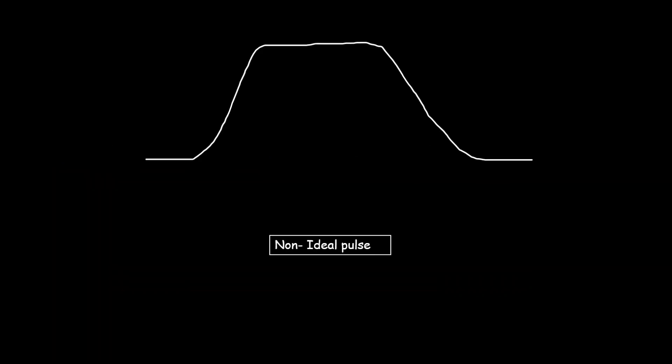Here we have a non-ideal pulse. In this case, there is a little time that it takes to move from low level to high level. Generally, it is common to measure rise time from 10% of the pulse amplitude to 90% of the pulse amplitude.